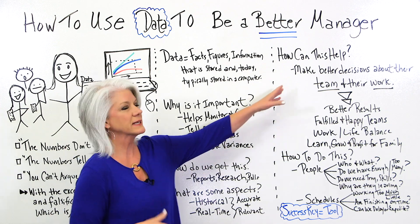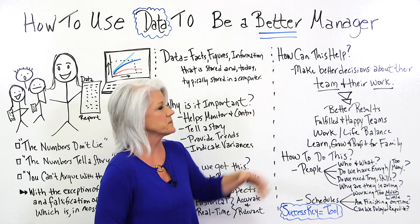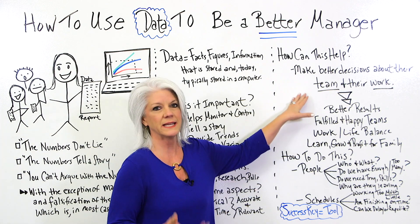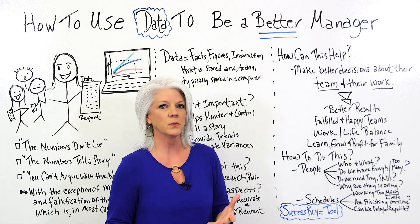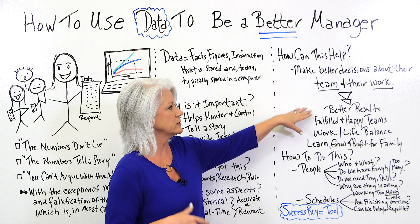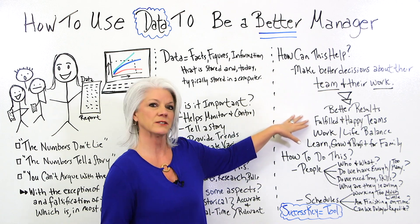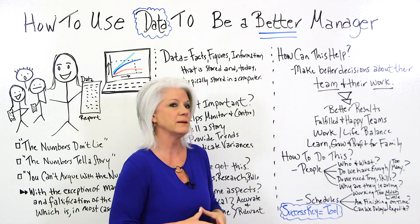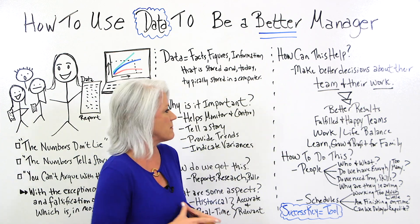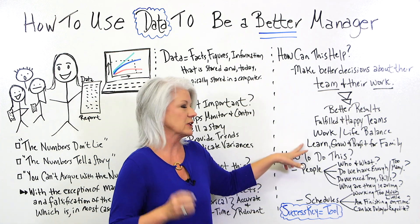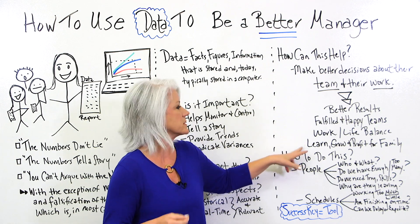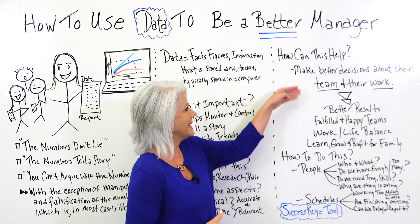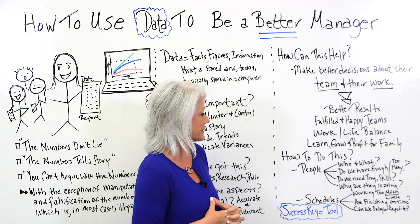So how can this help a manager? Managers are responsible for their team members and their work. They're striving to get better results, striving for happy and fulfilled teams — people with work-life balance — so that they can learn, grow, and profit for their family. So how does a manager take this data and get this for his team and team members?